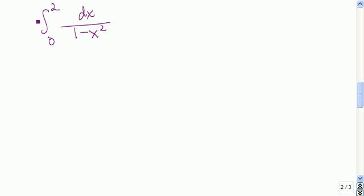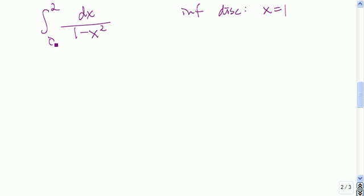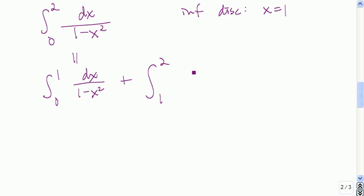Let's evaluate another one. This integral is improper because when x equals 1, the denominator is 0, so we have an infinite discontinuity at x equals 1. Since 1 is included between 0 and 2, we know we have that infinite discontinuity for this integral. So we break the integral up at that discontinuity: the integral from 0 to 1 of dx over 1 minus x squared, plus the integral from 1 to 2 of dx over 1 minus x squared.